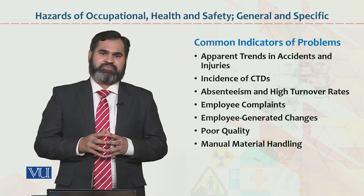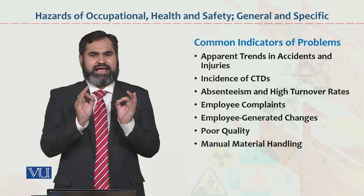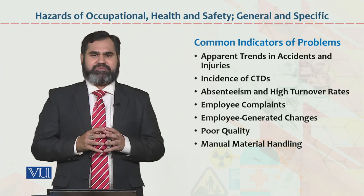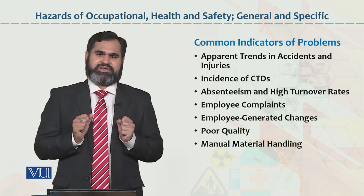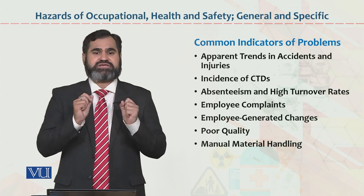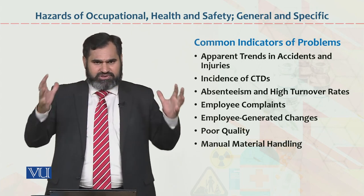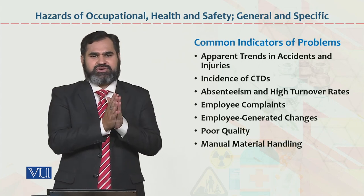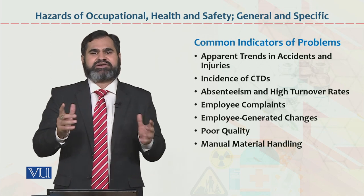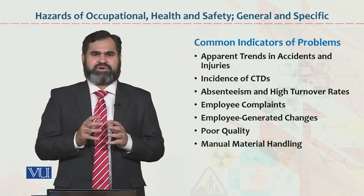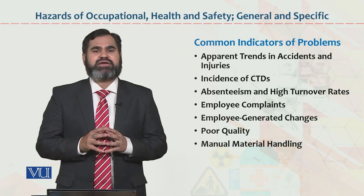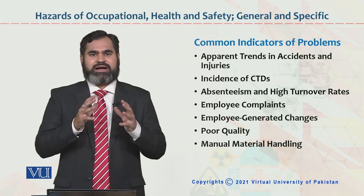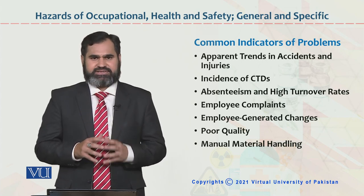Manual material handling: whenever you import any sort of machinery, it comes with a manual book that guides you on how to operate and use that machinery and what its SOPs are. If you follow all those SOPs and the manual when using the material, machine, machinery, or plant, the results will be comparatively better. With the help of all these indicators, we can considerably reduce or control job stress-related problems in the organization.